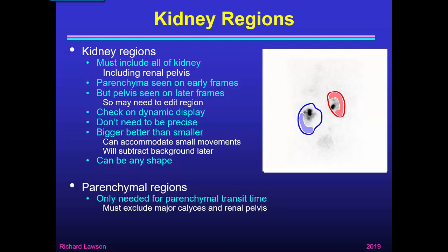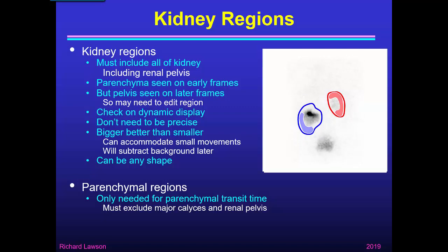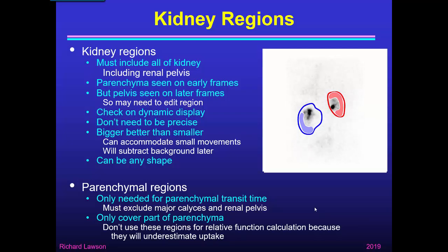For some applications you are asked to define parenchymal regions. This is needed if you want to calculate parenchymal transit time. In this case the regions must exclude all of the collecting system — the major calyces and the renal pelvis — because we're just interested in the functioning parenchymal tissues. This is quite difficult to do, because the kidney is a three-dimensional organ and all we have is a two-dimensional projection. The parenchyma wraps around the pelvis in 3D, so all we can do is draw C-shaped regions around the outer borders of the kidney to avoid accumulation in the renal pelvis. Because these regions only cover part of the parenchyma, you can't use them for relative function calculation, as they will underestimate uptake.